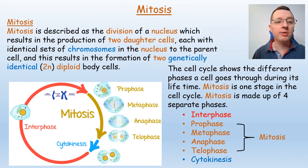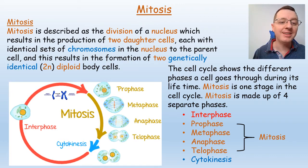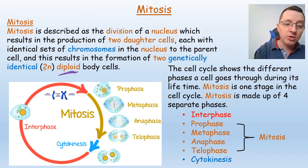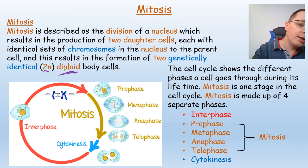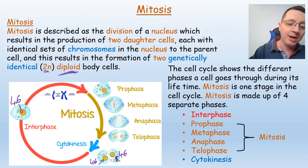So what exactly is mitosis? Mitosis is described as a division of a nucleus which results in the production of two daughter cells, each with an identical set of chromosomes in the nucleus to the parent cell, and this will result in the formation of two genetically identical diploid body cells. In humans that would be 46 chromosomes in the nucleus, and at the end of mitosis you would have two cells each with 46 chromosomes exactly identical to the original parent cell.